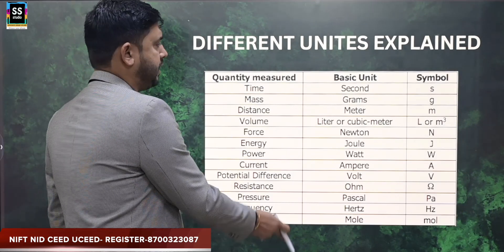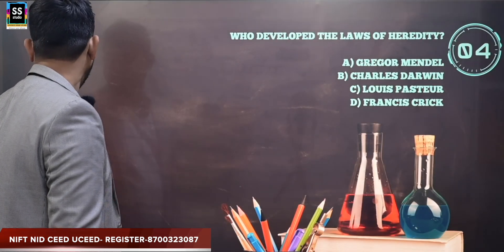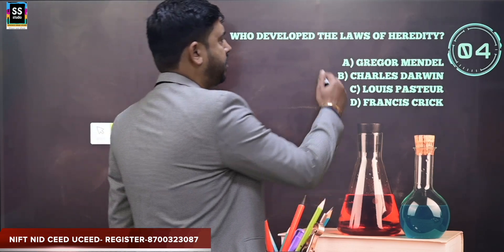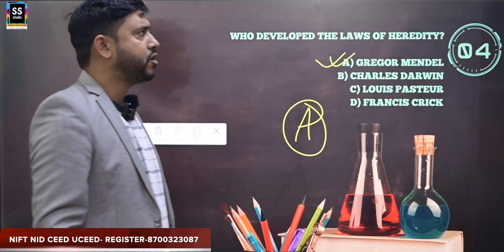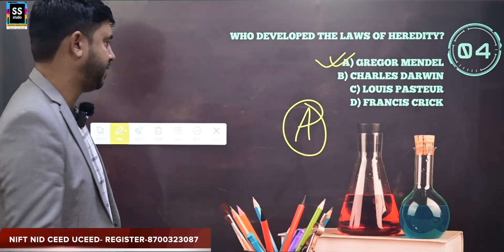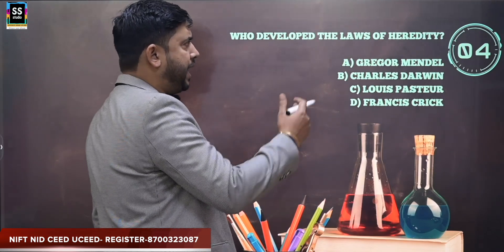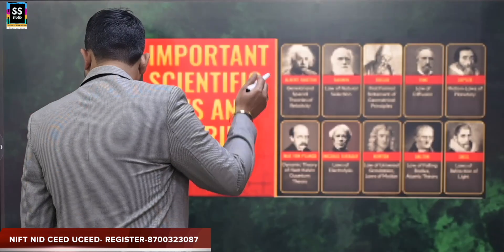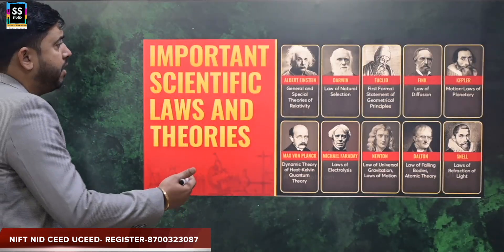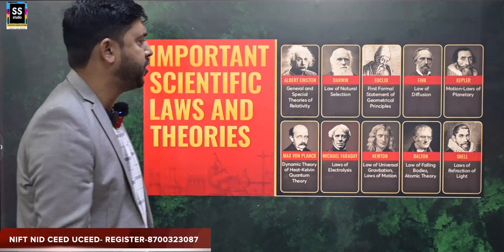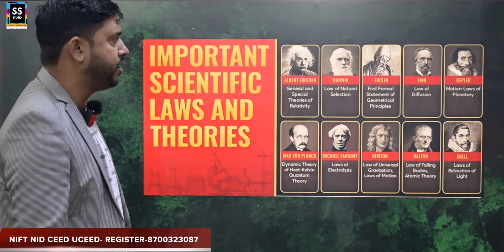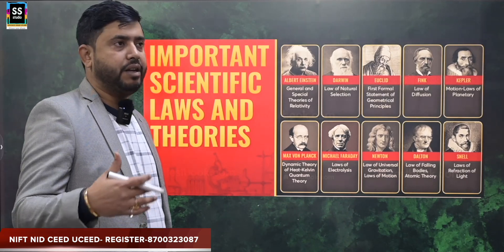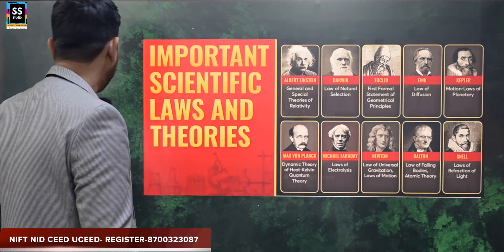The next question is: who developed the laws of heredity? The options are Gregor Mendel, Charles Darwin, Louis Pasteur, or Francis Crick. The correct answer is Gregor Mendel, who developed the laws of heredity related to genes. You need to memorize inventors and developers of different science laws — for example, Albert Einstein for the general and special theories of relativity, and Darwin for the laws of natural selection.